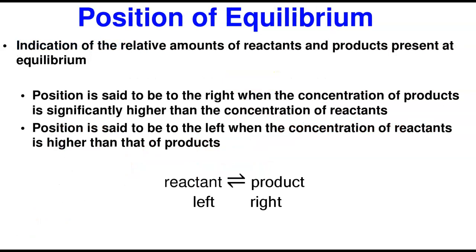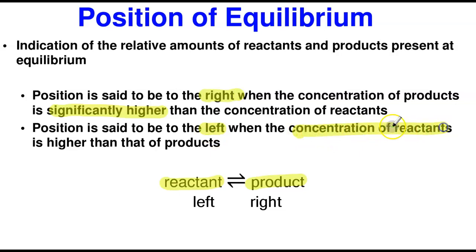The position of equilibrium is a relative indication of which side the equilibrium lies on. Equilibrium can lie either to the right or to the left. When equilibrium is to the right, you have more product forming. When it is to the left, you have more reactants. The position is said to be to the right when the concentration of the product is significantly higher than those of the reactants, and to the left when the concentration of the reactants is significantly higher than that of the product.